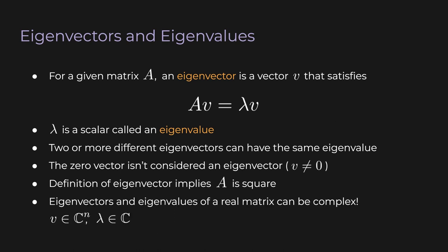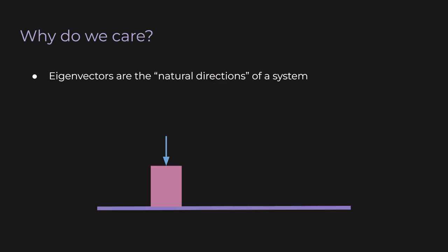So up until this point we've always assumed we're only dealing with real numbers. All our matrices and vectors are filled with only real numbers, but you'll soon see that even if the matrix A is real, it can have complex eigenvectors and eigenvalues. But before we get lost in the details, why should we even care about eigenvectors?